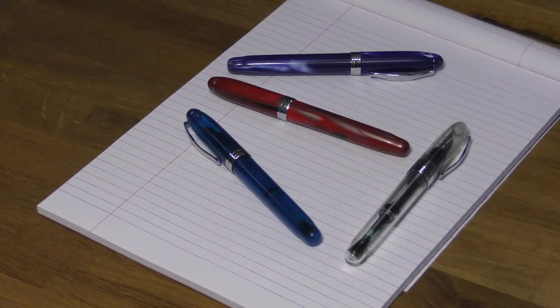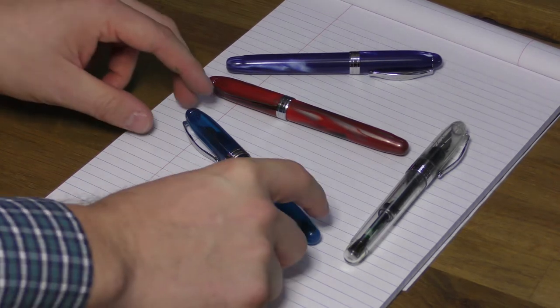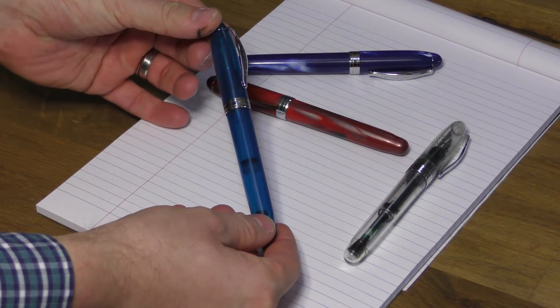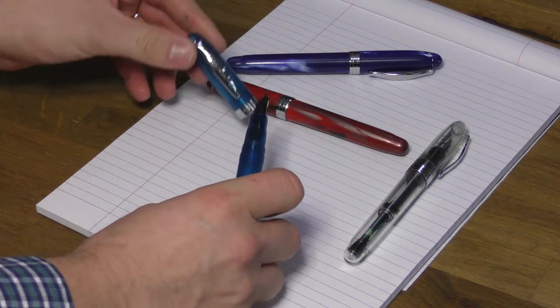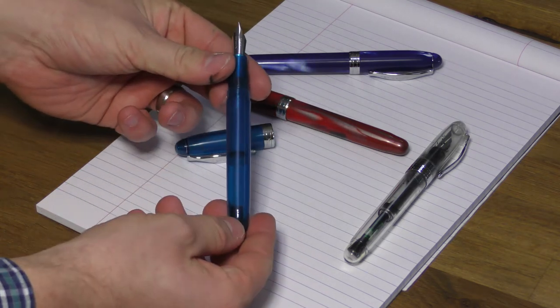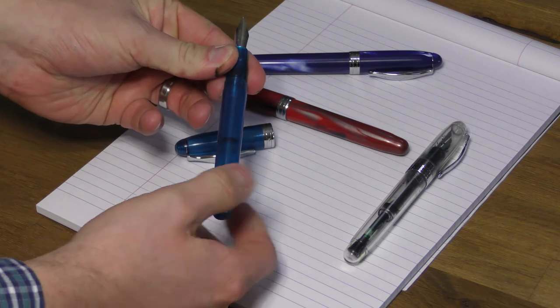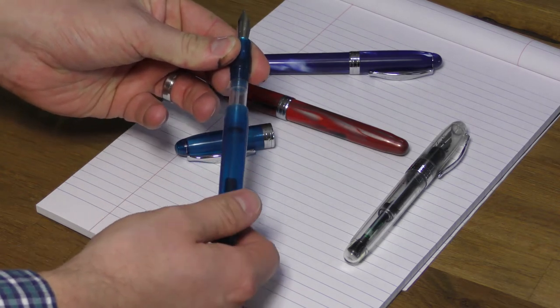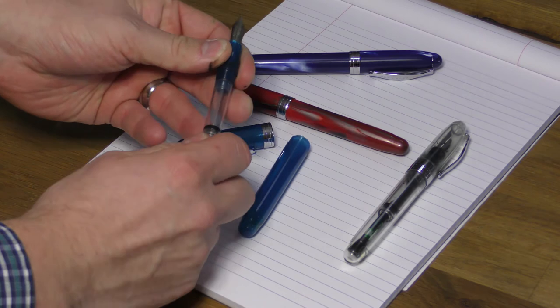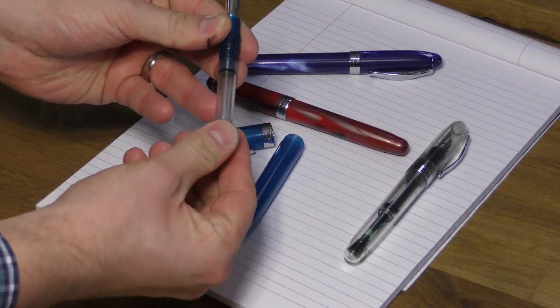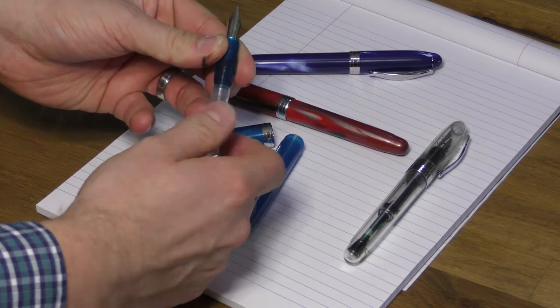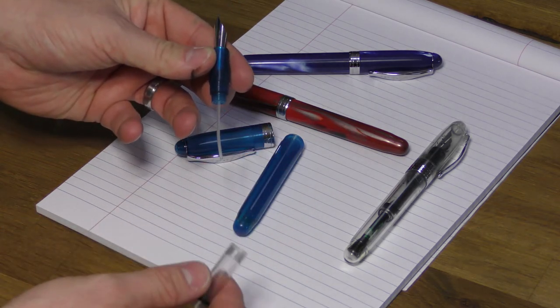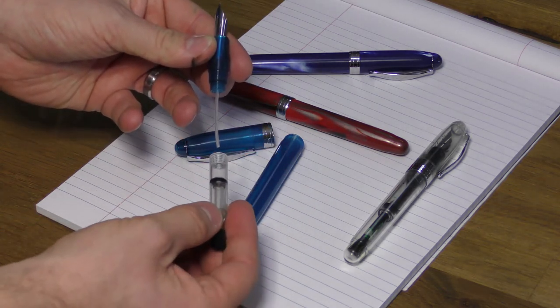The most popular model in the Noodlers pen range though has got to be the Ahab. It's a favorite of many thanks to it pretty much encapsulating all the main Noodlers characteristics. It's got the wet flexible size 6 nib and it's pretty much 100% deconstructible. The filling mechanism is unique in comparison to the Nib Creeper and Conrad too. It has a standalone plunger which can be removed and replaced with a reloadable cartridge which is available separately, or you can remove that plunger and fill the whole barrel with an eyedropper if you prefer.